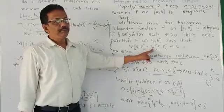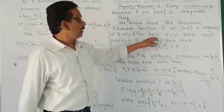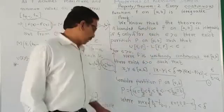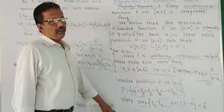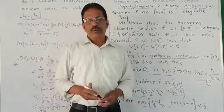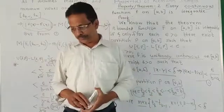U(F,P) minus L(F,P) is less than epsilon. And if it happens, if U(F,P) minus L(F,P) is less than epsilon, then the function is integrable. And here we write: function is integrable. This is also an important property and easy property.